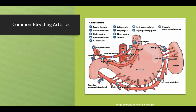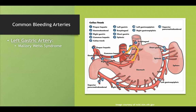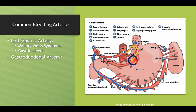You also need to know which arteries are responsible for bleeding in certain conditions. The left gastric artery is associated with two conditions: Mallory-Weiss syndrome and gastric ulcers — when they bleed, it's typically from the left gastric. The gastroduodenal artery is also important because posterior duodenal ulcers can bleed from it and cause life-threatening hemorrhage.